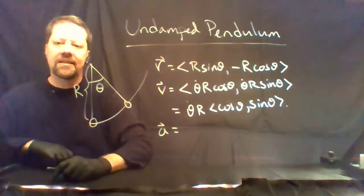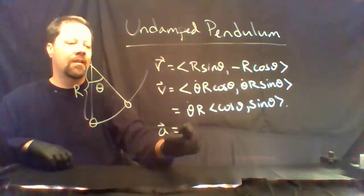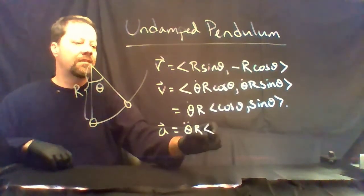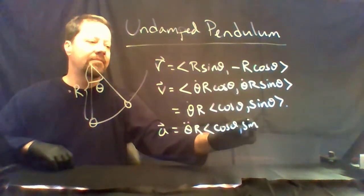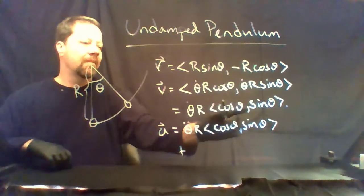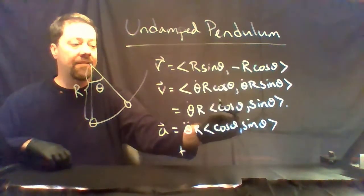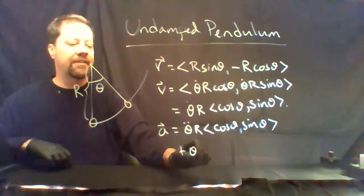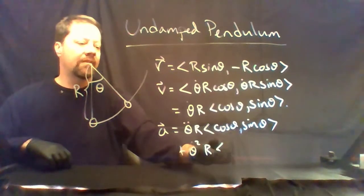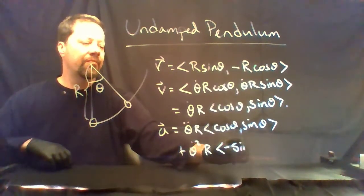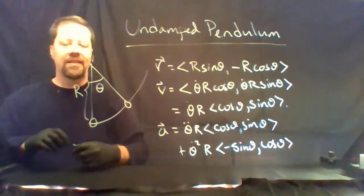Now the acceleration vector requires the use of the product rule. So we'll have theta-dot-dot r times the vector (cosine theta, sine theta), but we add to that the derivative of the unit vector. The derivative will have an additional factor of theta-dot, giving us theta-dot-squared r times (-sine theta, cosine theta).